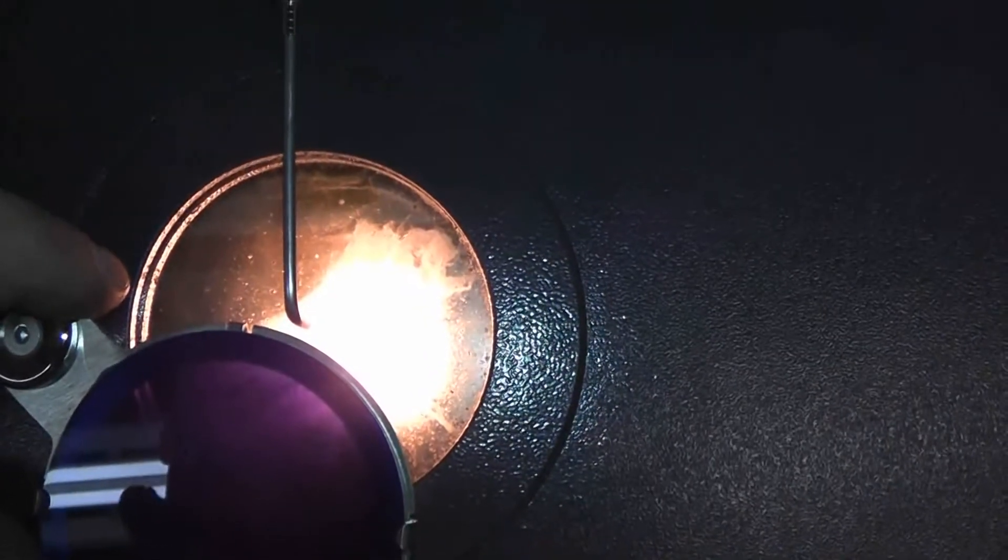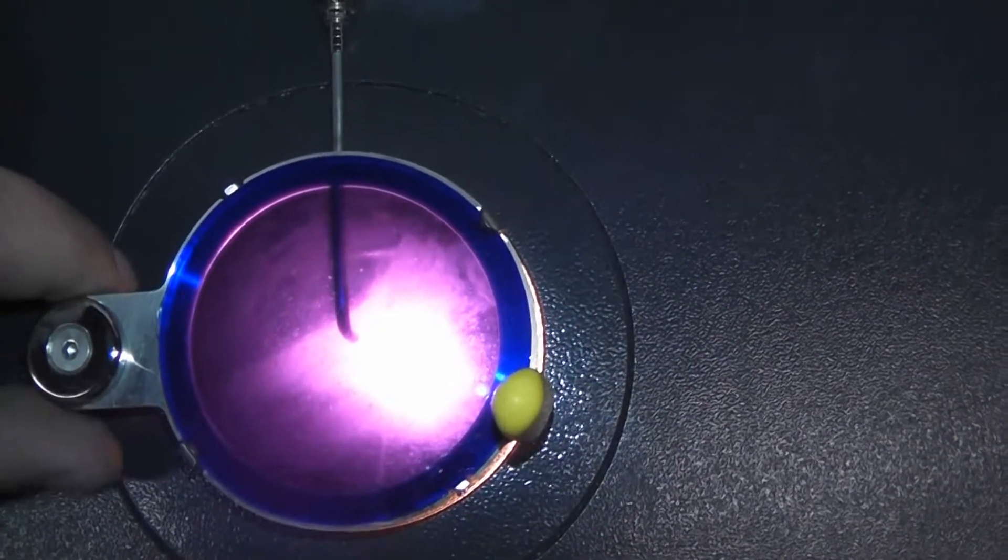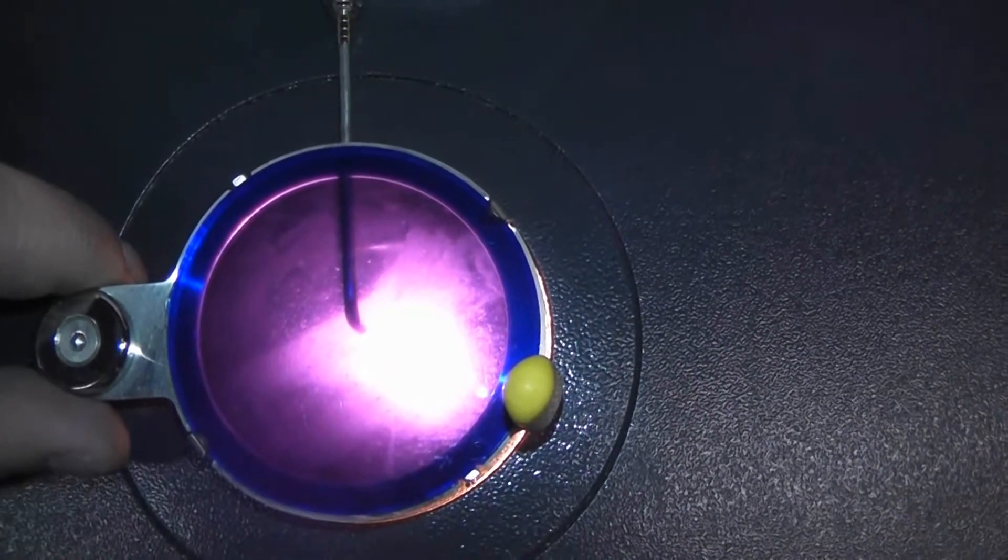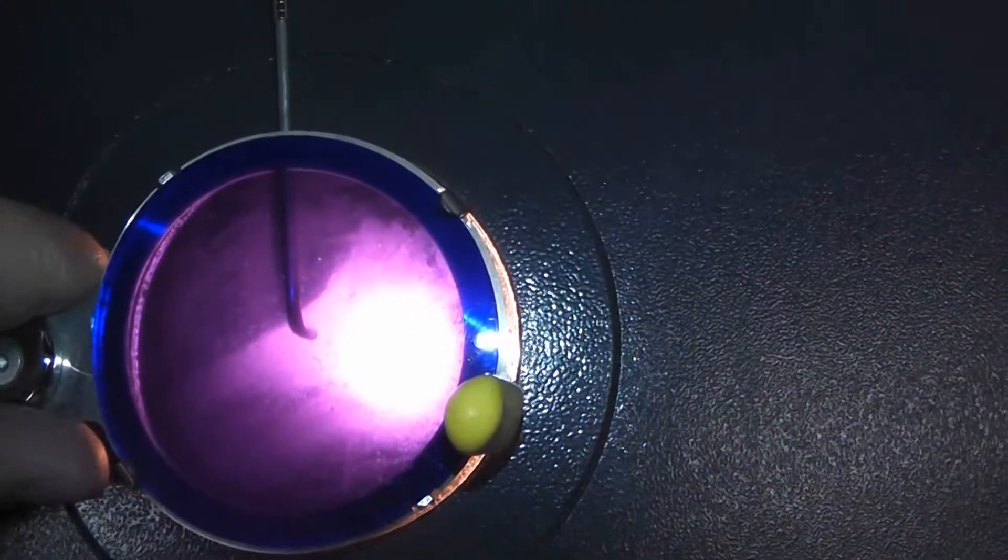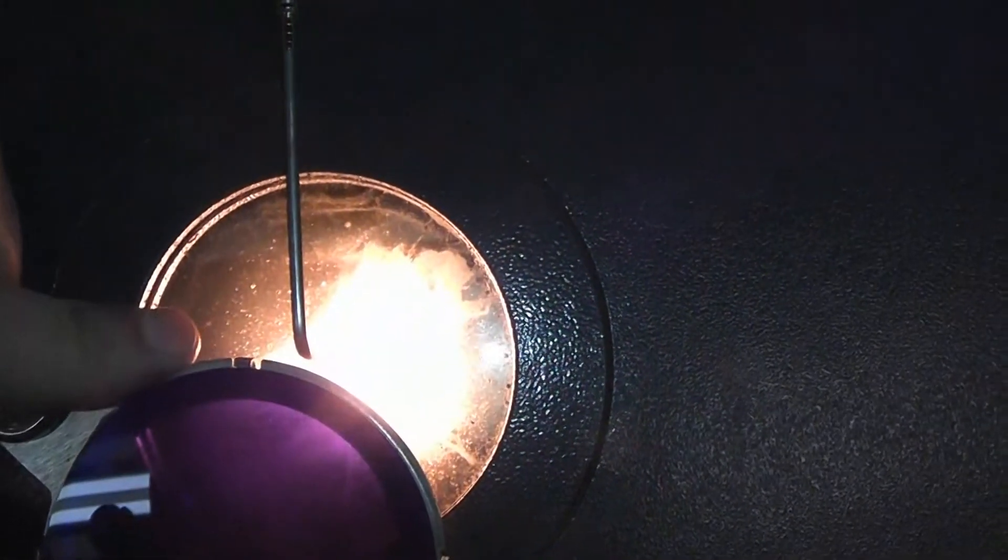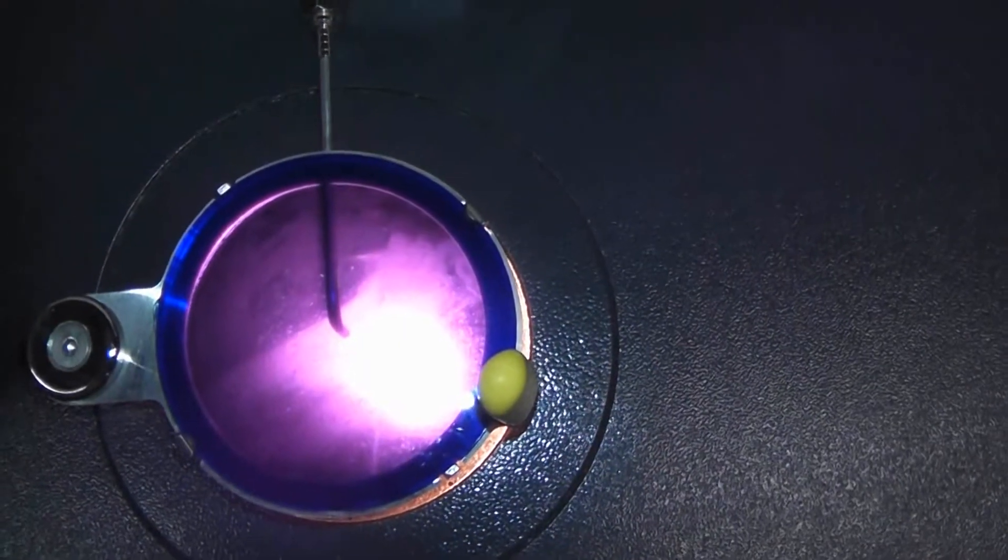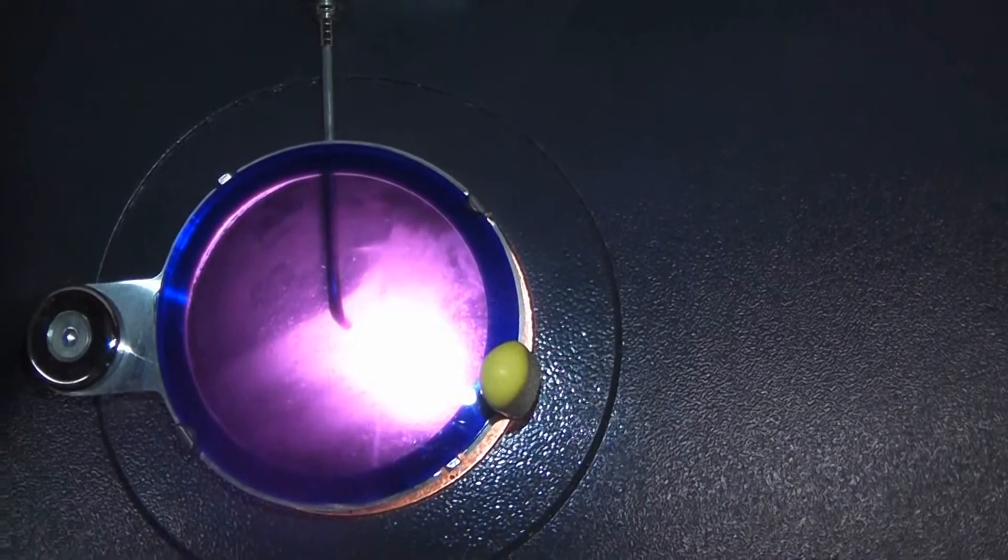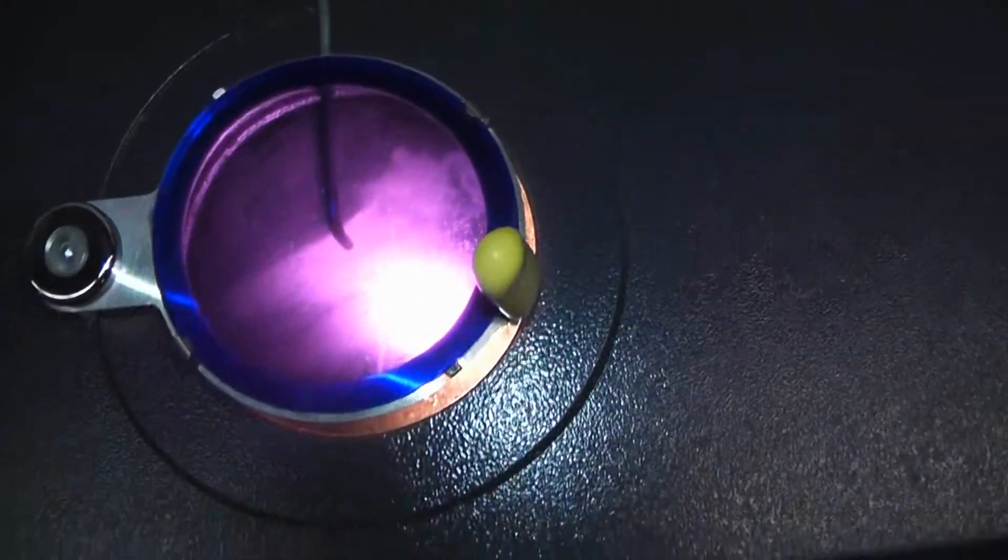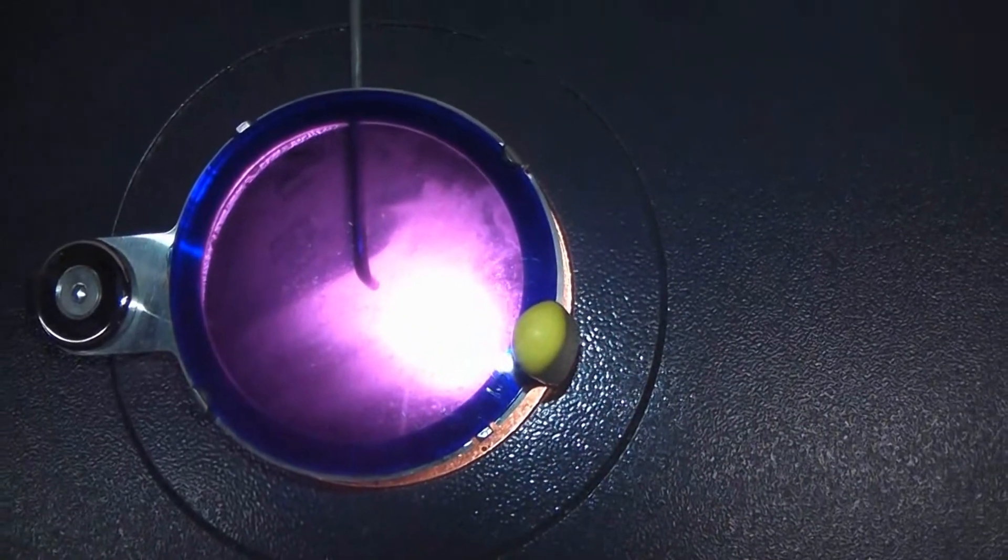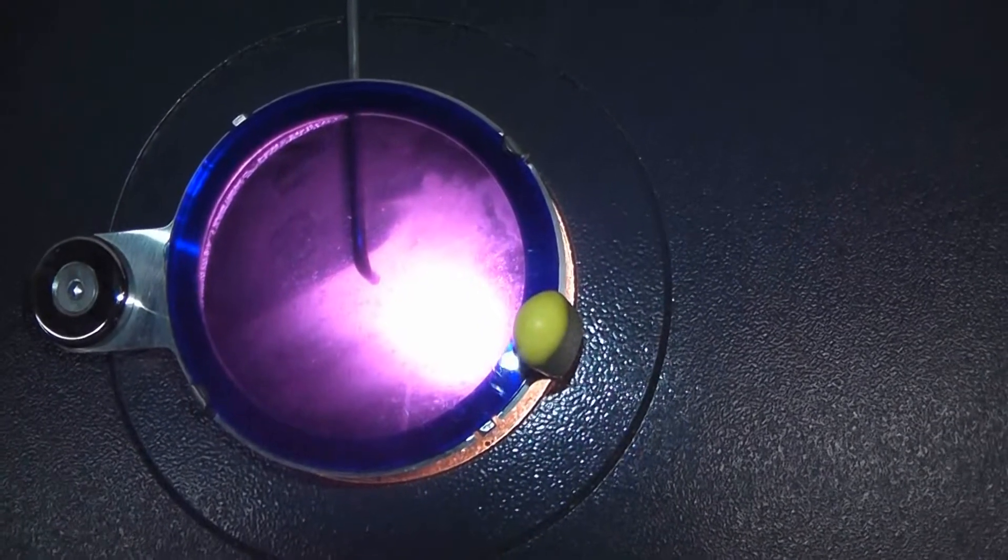The material is now molten. It's at 1200 degrees. We are going to wait until we reach somewhere close to between 1300 and 1350 to cast it. We are at 1325 and we are going to cast now.